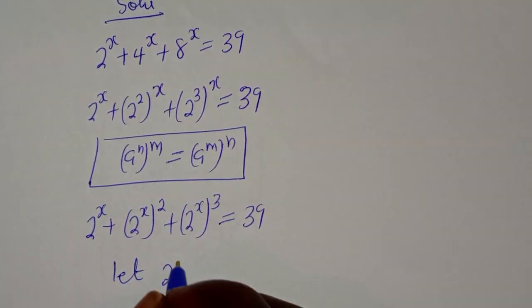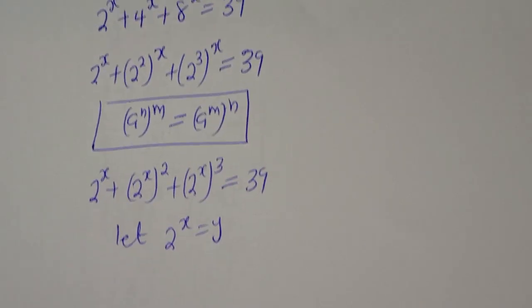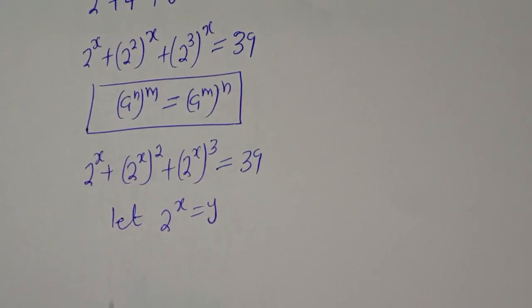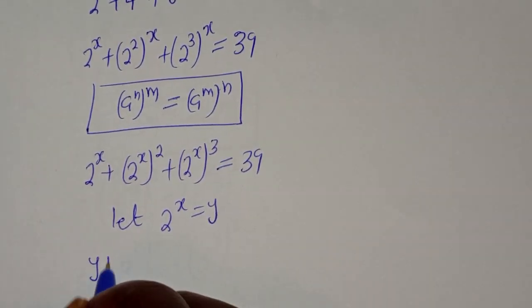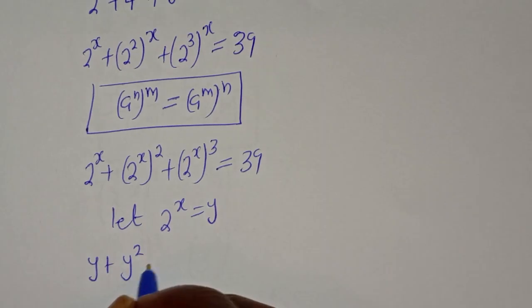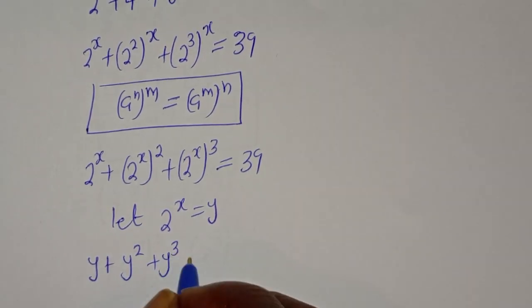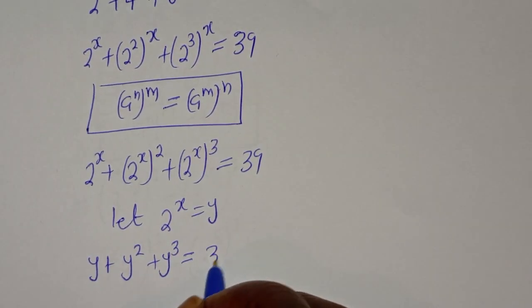Let 2 raised to power s equal y. Then we have y plus y squared plus y raised to power 3 is equal to 39.